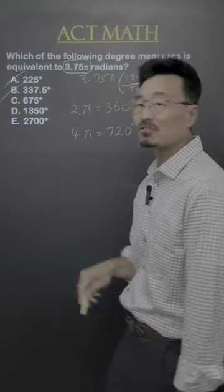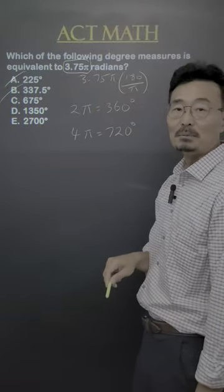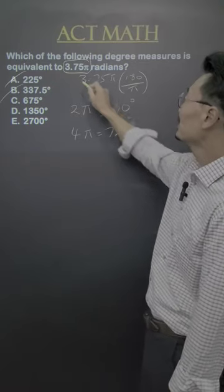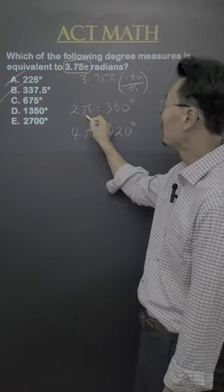we know that A and B have to be eliminated right away, since 2 pi is 360, 3.75 pi must be more than 2 pi.